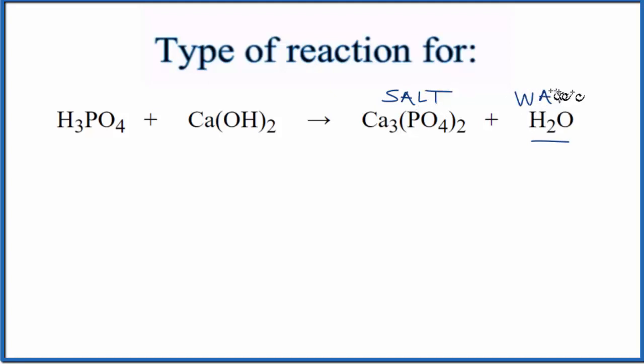And when I see a salt and water in the products, I'm thinking it's probably going to be neutralization. In the reactants, we said we have phosphoric acid, one you should memorize, and then we have a metal bonded to an OH, so this is a hydroxide. So when we have something like a calcium hydroxide, that's going to be a base.